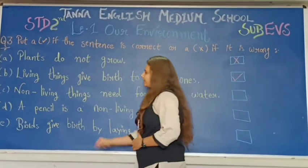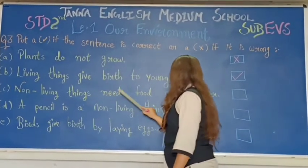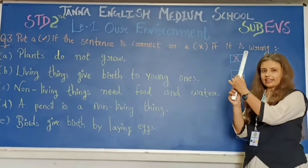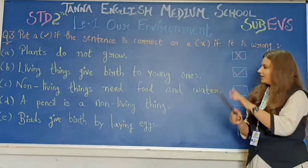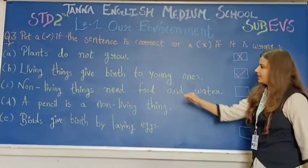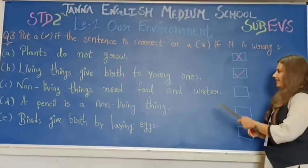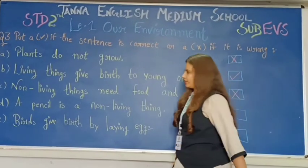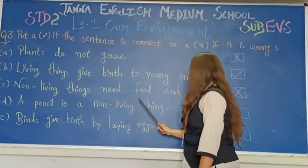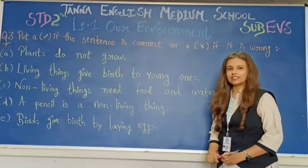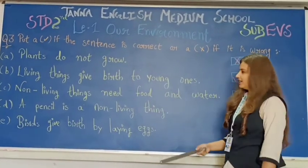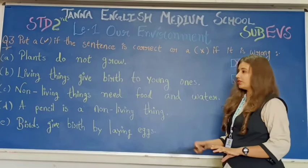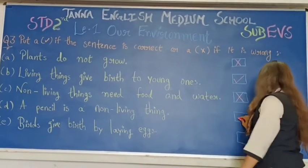Our next question is: non-living things need food and water. Is it right or wrong? Of course, wrong. Can a scale need water and food? No. Why? Because it is a non-living thing. So the answer is wrong. Next question: a pencil is a non-living thing. What is your answer? It is right. A pencil is a non-living thing. Can a pencil breathe? Can a pencil grow? No. Why? Because it is a non-living thing. So we put here, right.